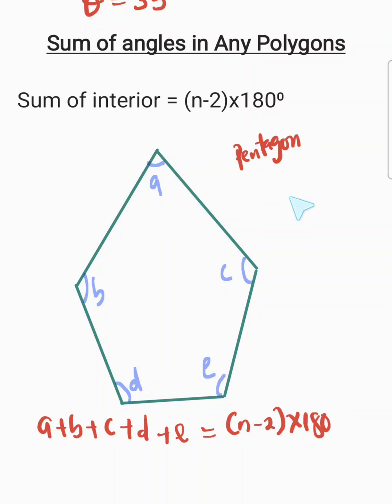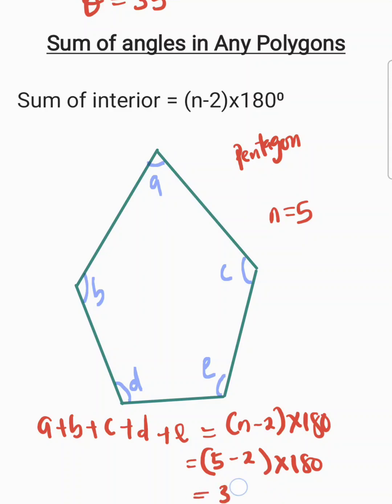Our n in this case is 5. So the sum equals 5 minus 2 multiplied by 180, which gives 3 times 180 degrees, equal to 540 degrees. This demonstrates the rule that the sum of interior angles equals n minus 2 multiplied by 180 degrees.